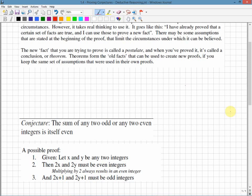Conjecture. The sum, the addition, of any two odd or any two even integers is itself even. So we're trying to prove, we're proving this time with deductive reasoning. We're not just showing a few examples. We're going to show in every single case. Again, the assumption we're making is that we're working with base 10.